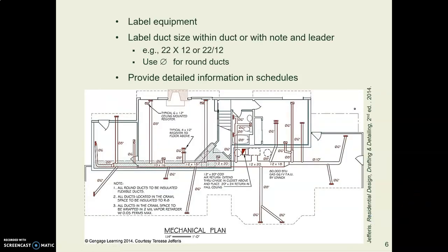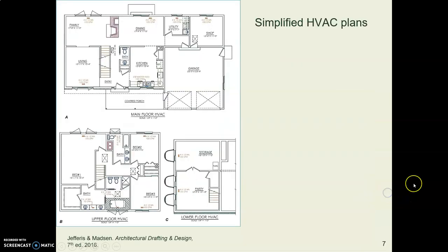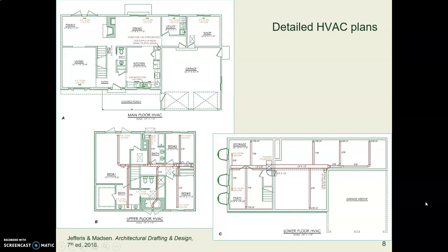Like in other kinds of architectural drawings, you provide labels. You'll have to use your judgment about what kinds of things you're going to list on your schedules and what you're going to write right on the drawing. For example, the ductwork you probably want to label right on the drawing. Here is an example from our book of a simple plan, and here is a more detailed plan with more equipment. In the lower right you can see the ductwork and the sizes written on the ductwork.